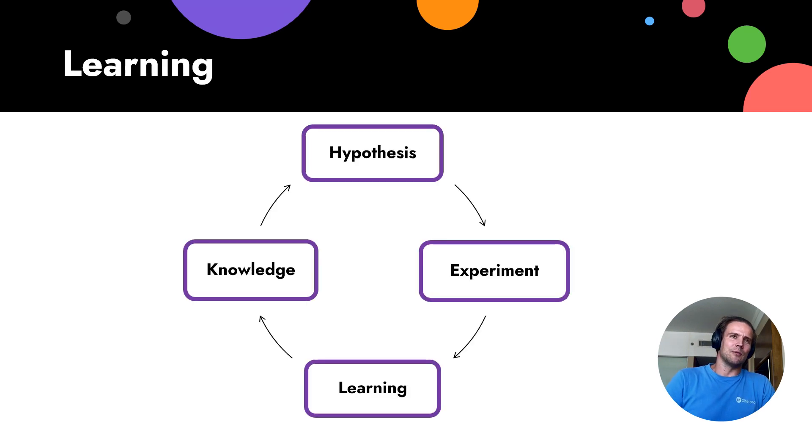So usually how we do learning? We run the hypothesis. So we start the hypothesis. We provide an idea. Then we do an experiment. When the experiment is done, we learn from it and we get knowledge. So it's PDCA cycles or PDCA cycle analogues.